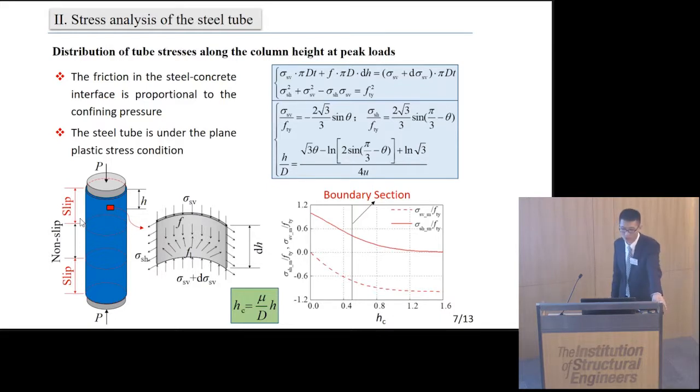First, the friction at the steel-to-concrete interface is proportional to the confining pressure. Second, the steel tube is assumed to be under the plane plastic stress condition. Both of these assumptions were verified by the test results.